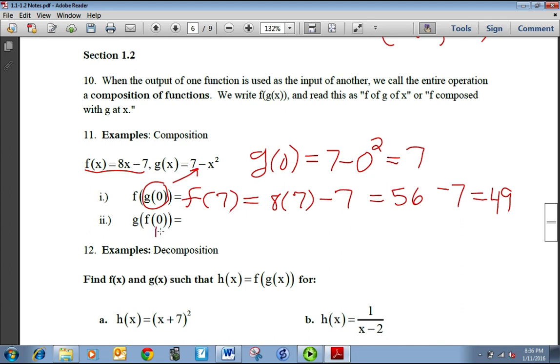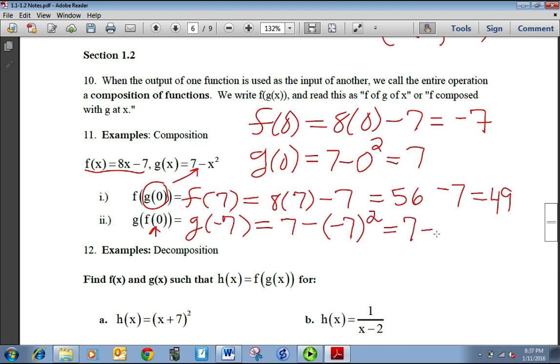Alright, now the second one we're going to start again from the inside. You always start from the inside. That's f of 0. So f of 0, if I plug 0 in for f, I get 8 times 0 minus 7. That's negative 7. So really what I want is g of negative 7. Well, if I plug negative 7 in for x in the g function, I get 7 minus negative 7 squared, which is 7 minus 49, which equals negative 42. So that's how we deal with composition of functions.